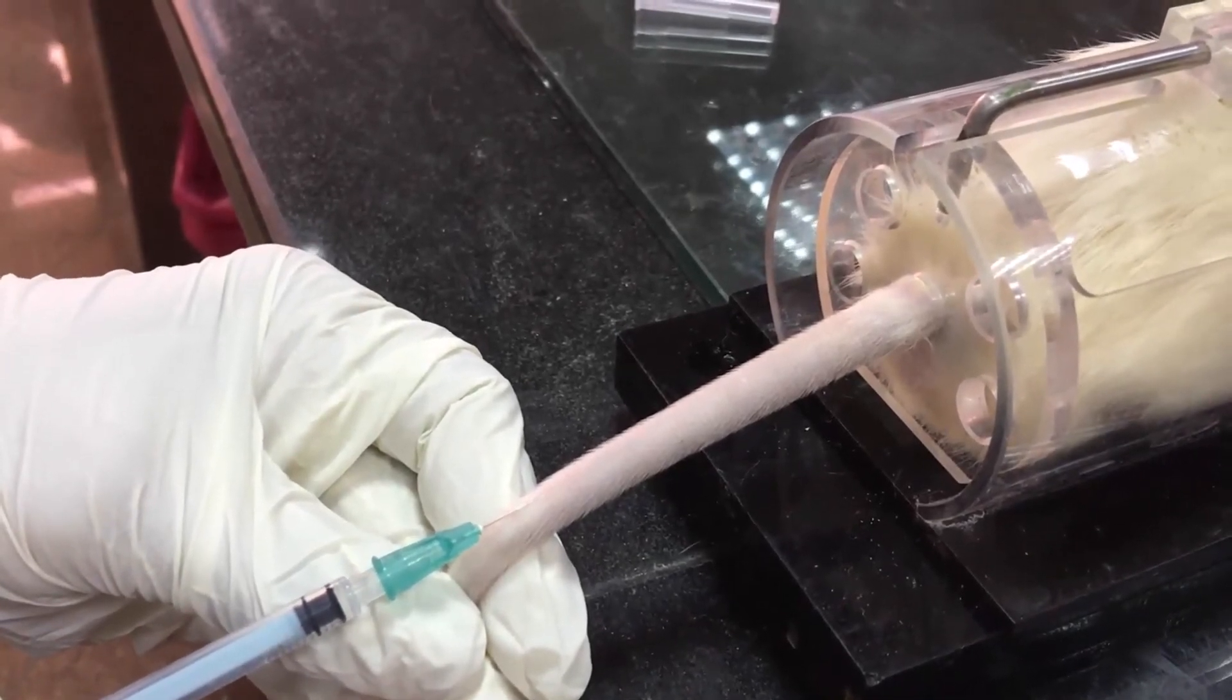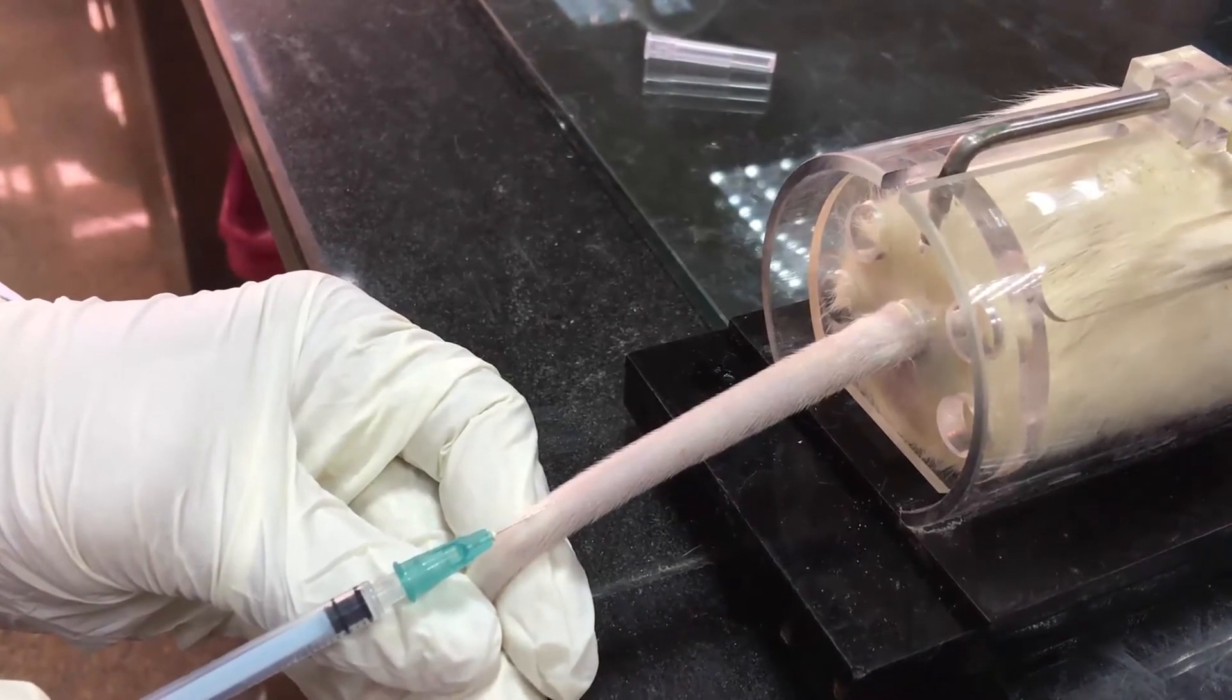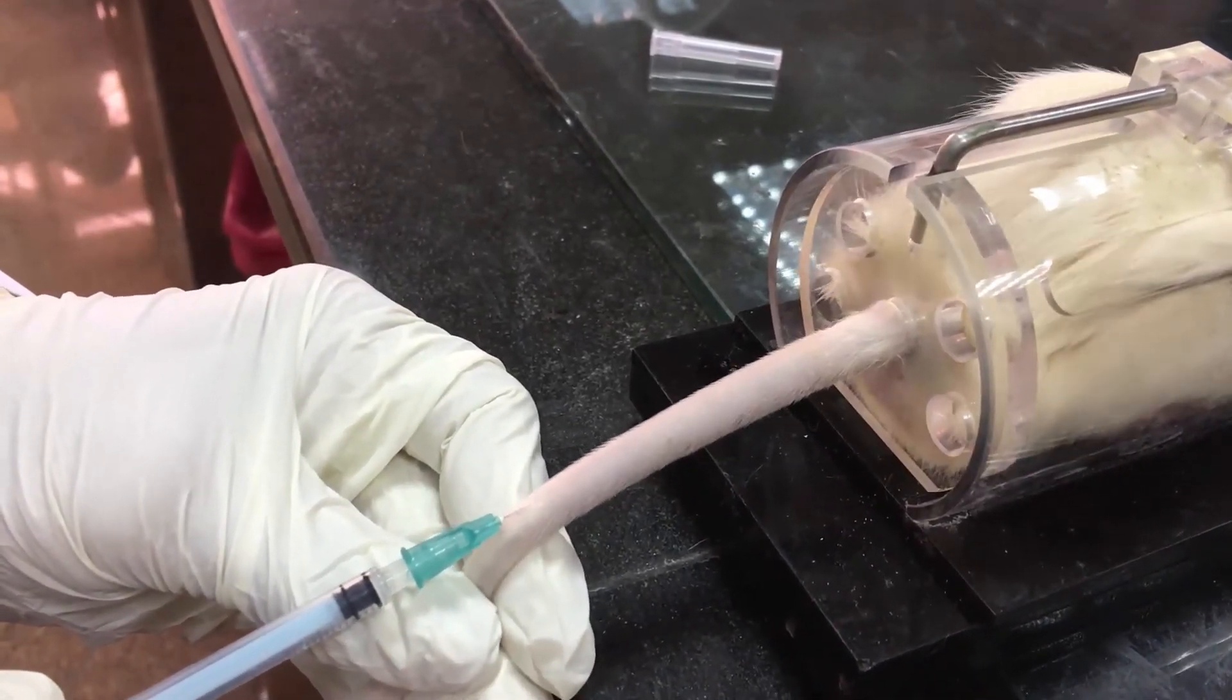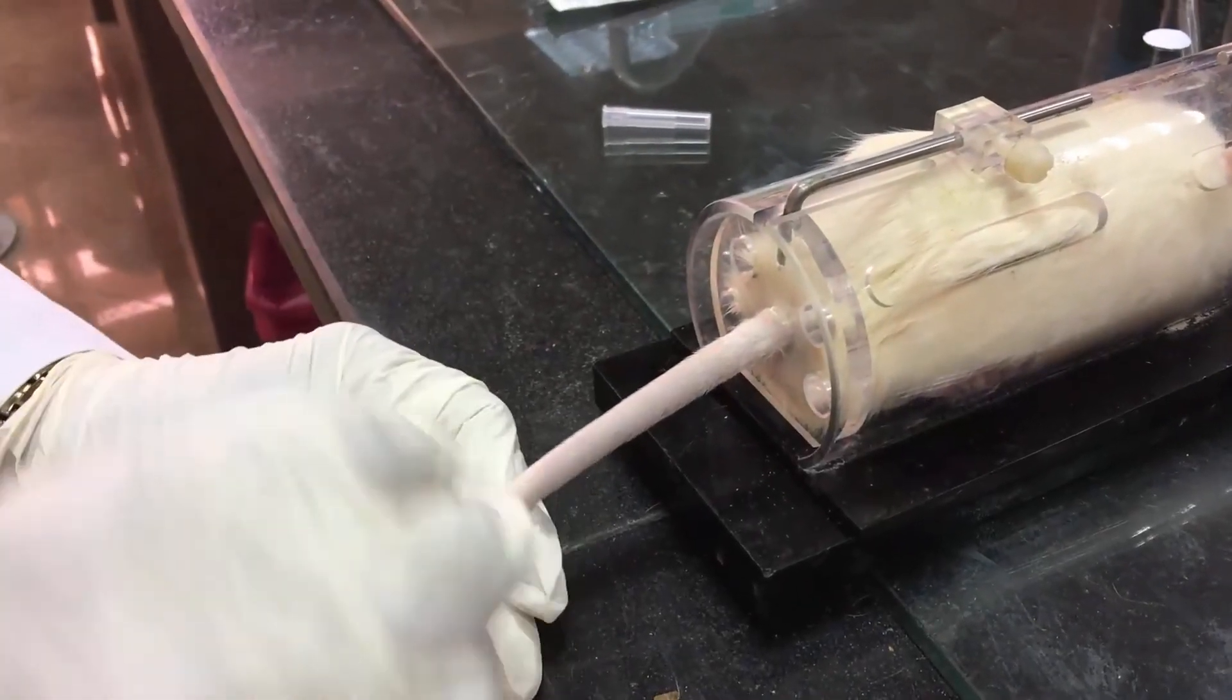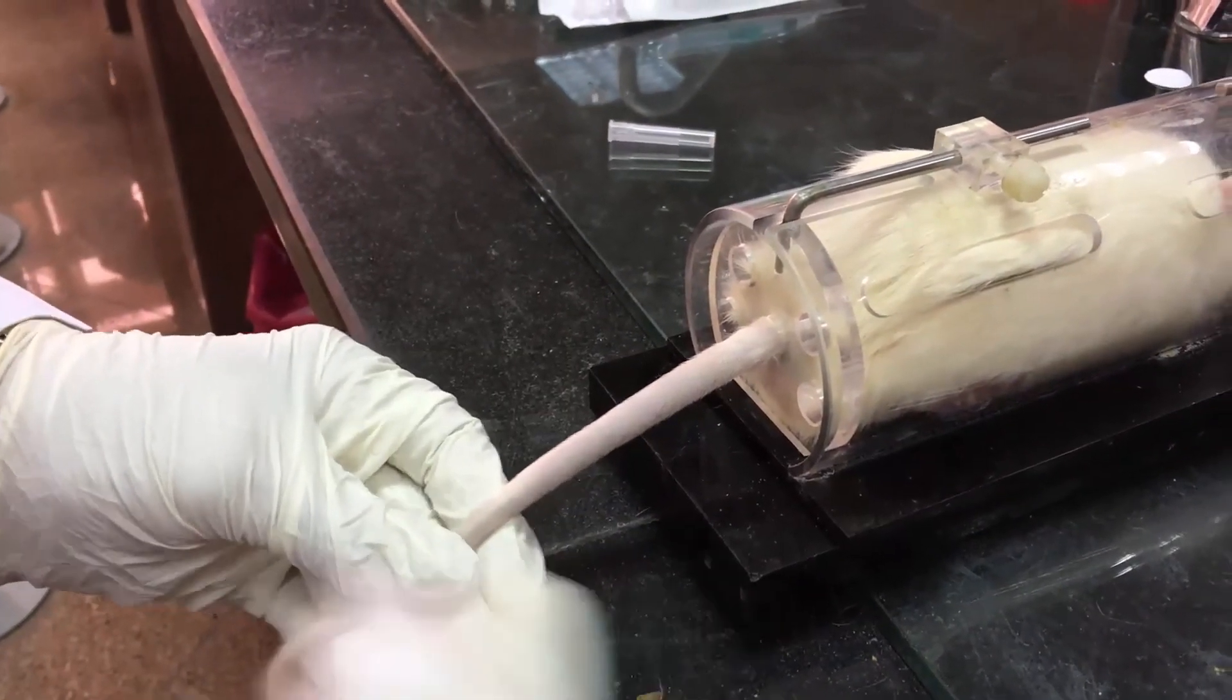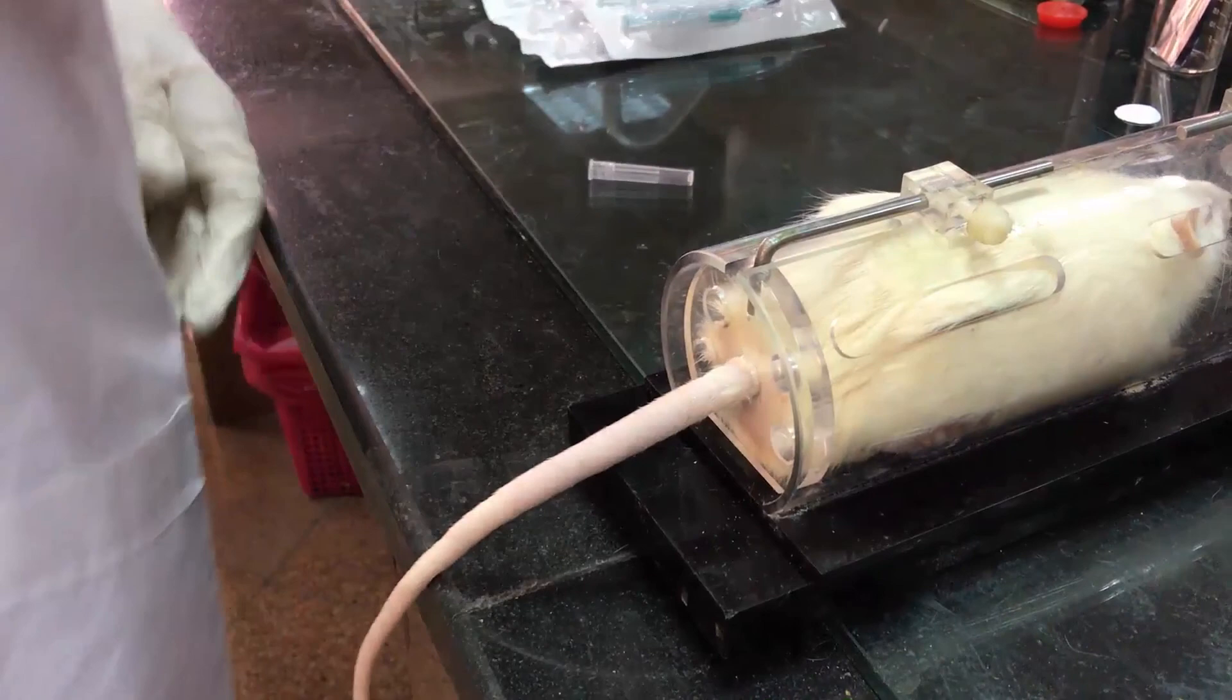You should see the vein blanch if the needle is properly positioned. If any swelling at the injection site or resistance to injection occurs, you should remove the needle and reinsert again slightly above, not below, because the lower part of the tail will be obstructed or collapsed.